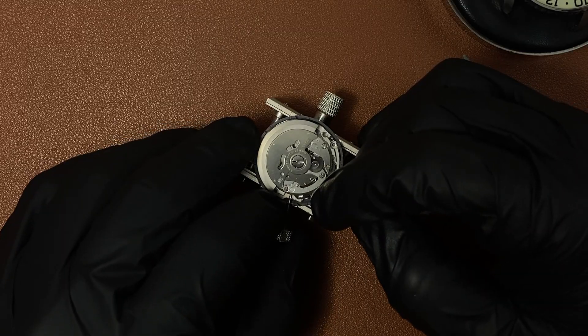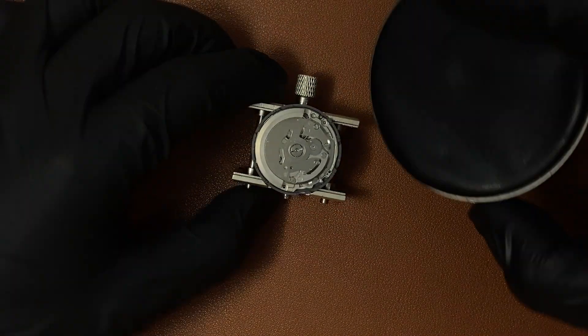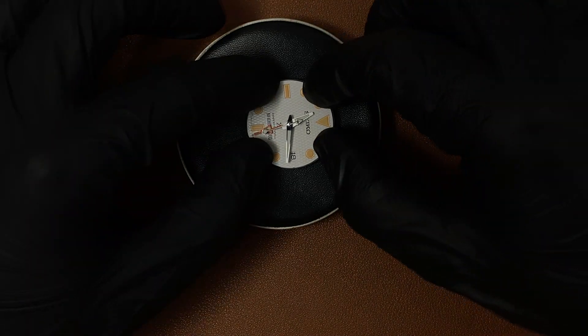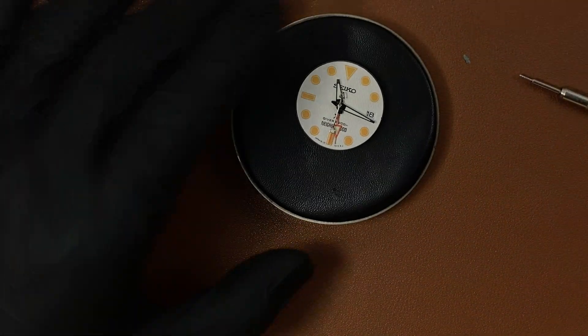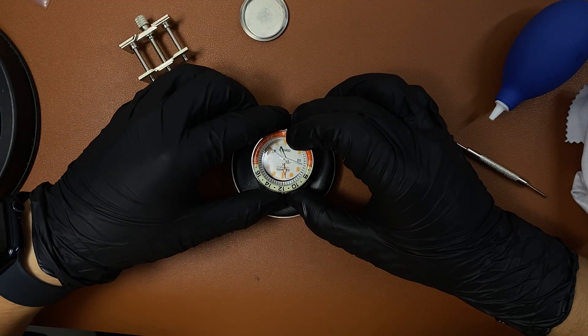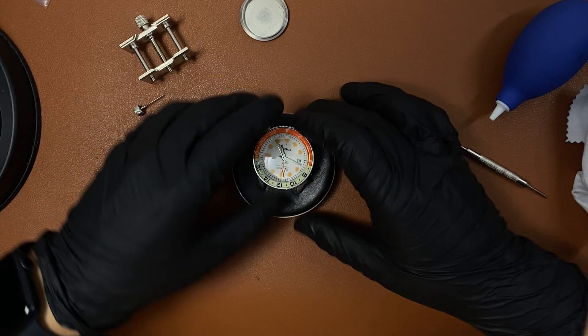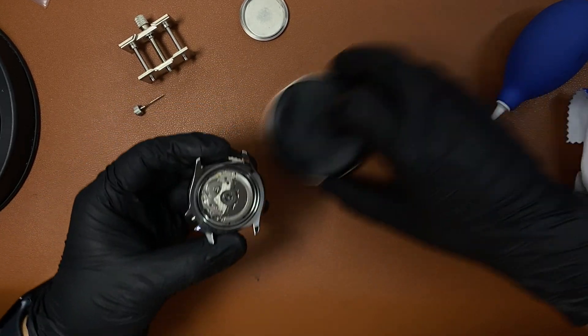Now remove the stem. It's time to actually place the movement back into our case. Now slowly place the case over the movement, apply a little bit of pressure, flip the case around, and your movement is in.